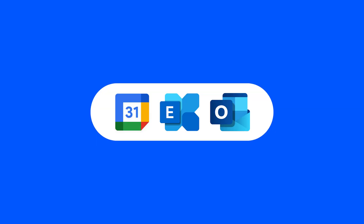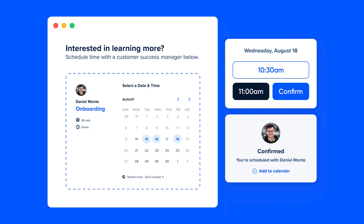At the heart of Calendly is the scheduling page, also referred to as the booking page. Here's how it works: you connect your existing calendars, set up some additional availability rules within Calendly, and you're done. When you share your scheduling link, your customers can choose the time that's most convenient for them.